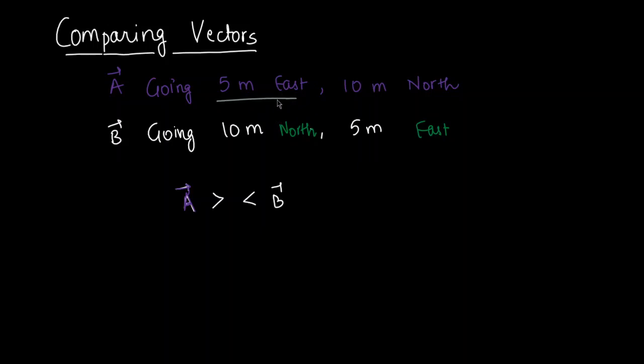Here also you go 5 meters east, and here as well you go 5 meters east. Here you go 10 meters north, and here as well you go 10 meters north. So in this case, now you can say that these two vectors are equal. So you cannot really say which vector is greater than which, but you can say which two vectors are equal.